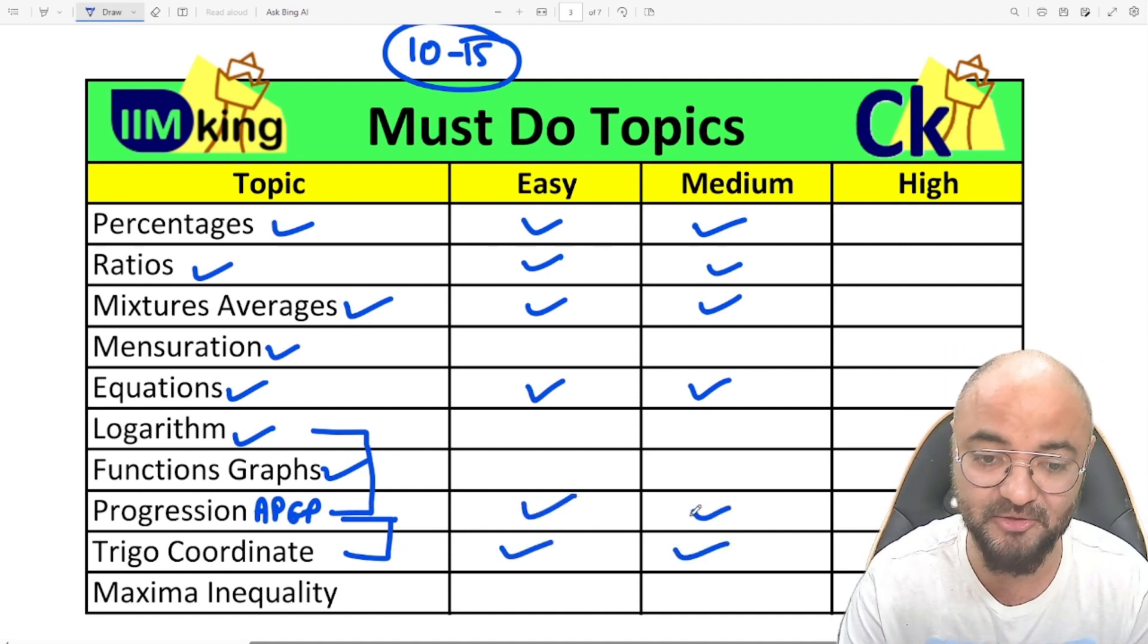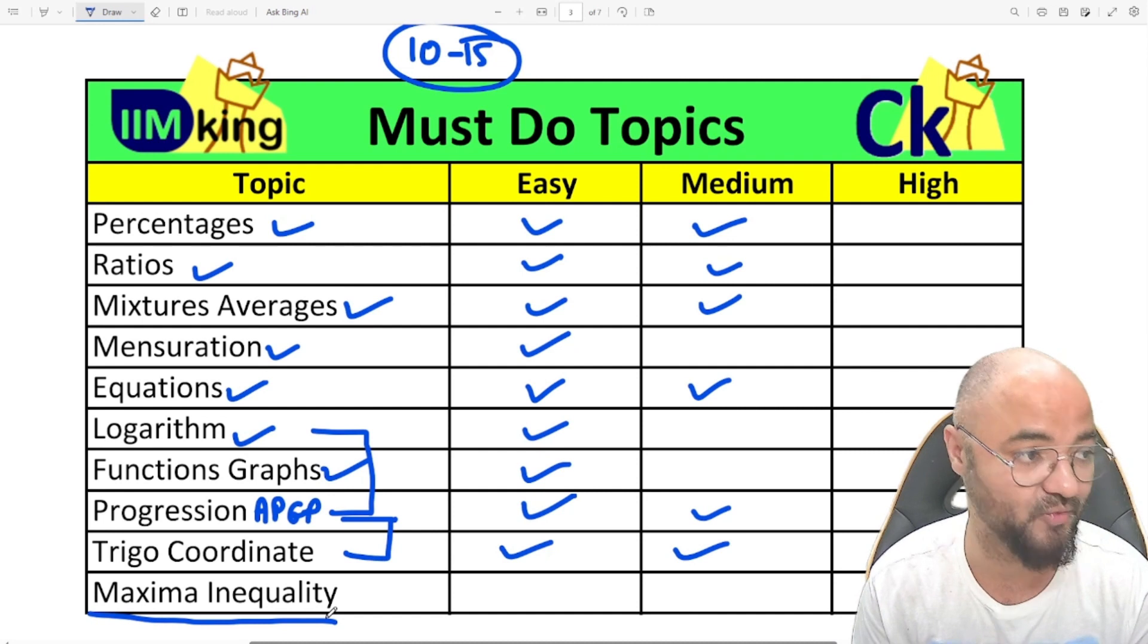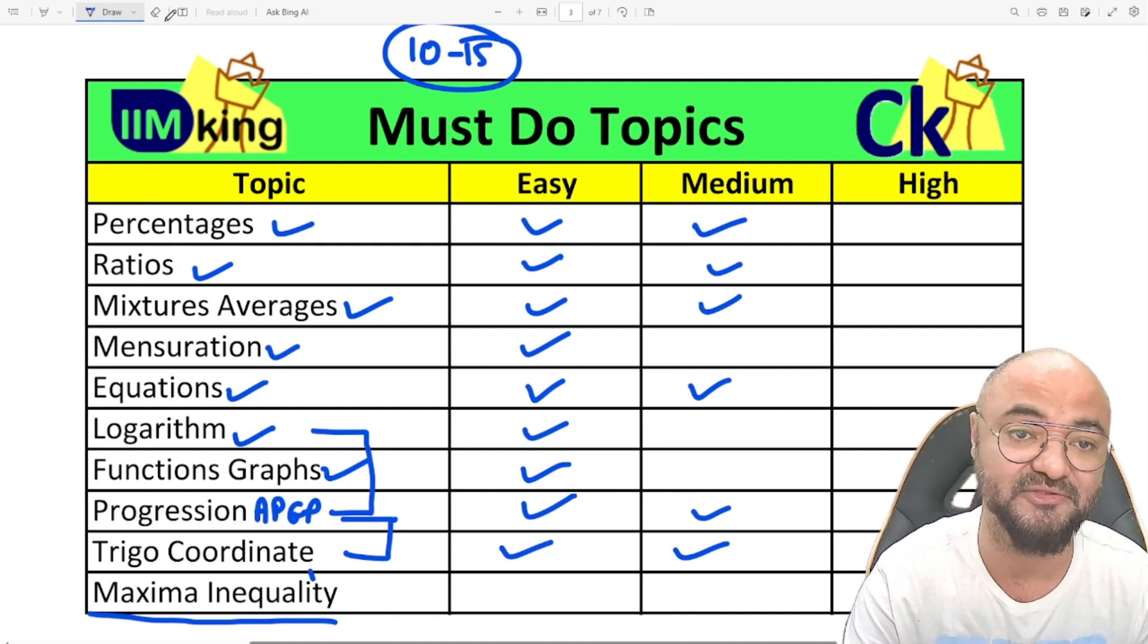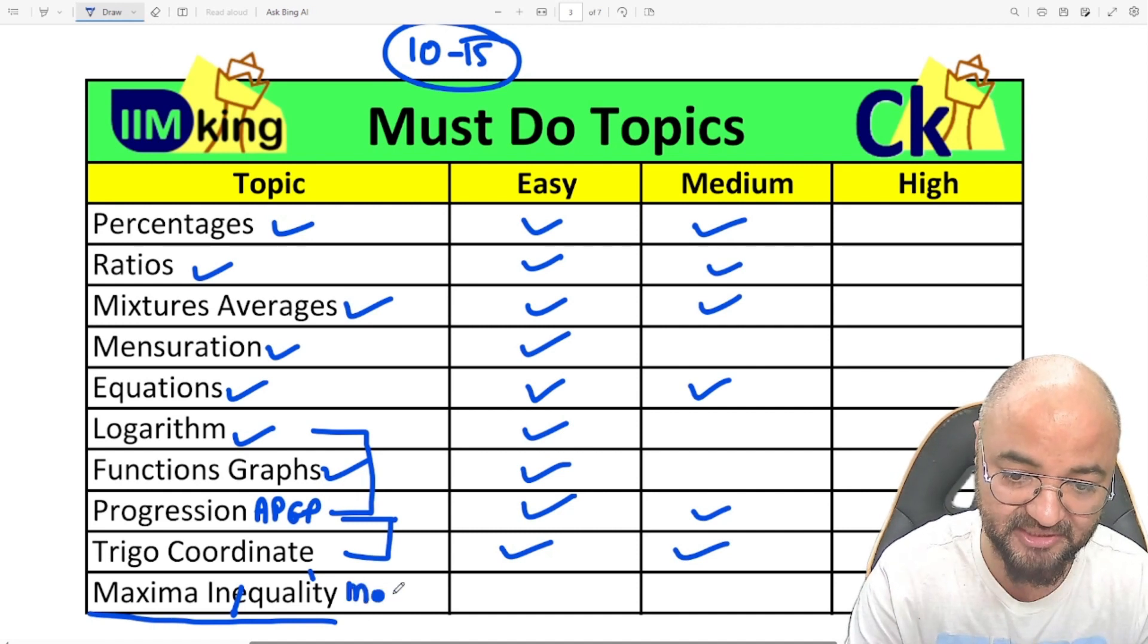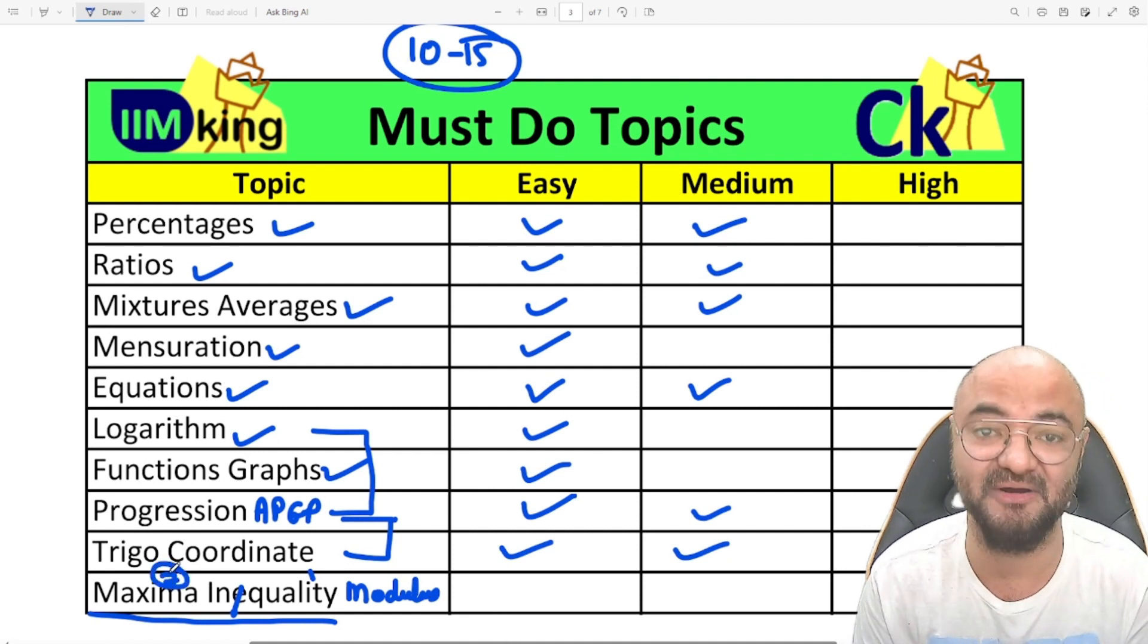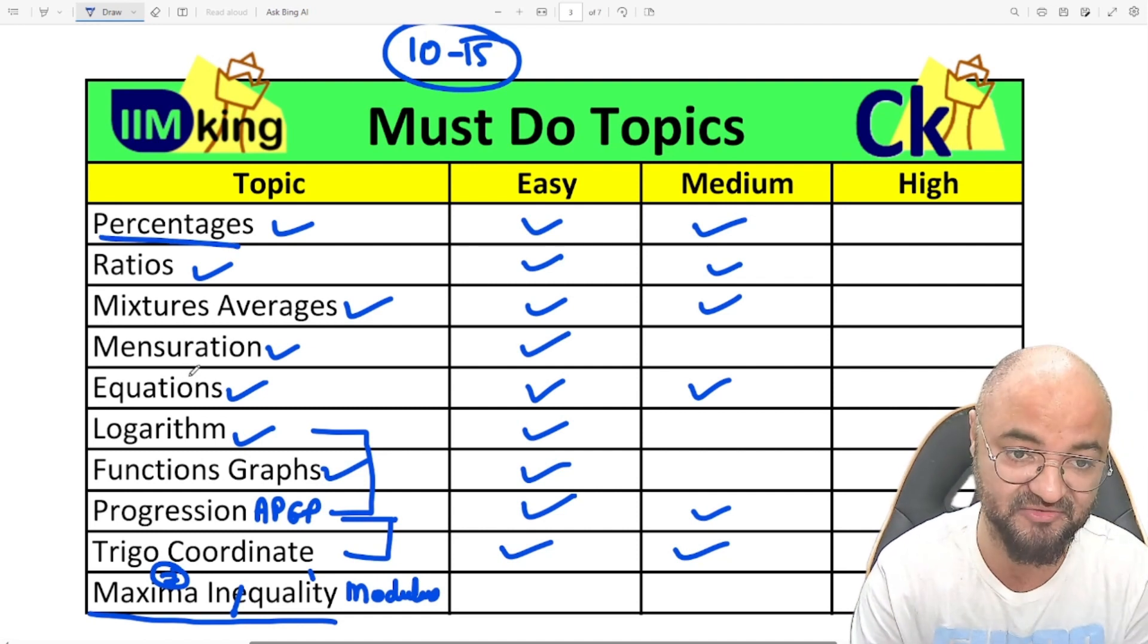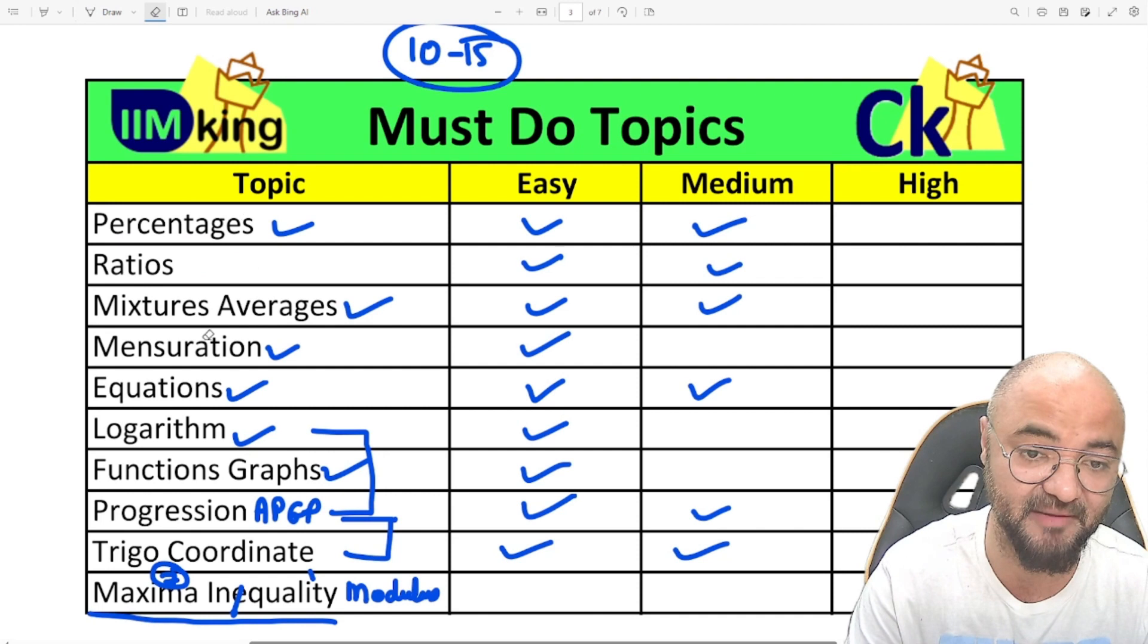Last but not least is maxima-minima and inequality. I can bet that maximum people are going to ignore these topics. If I add modulus into that—you'll be surprised to know last year there were seven questions which had maxima word in it: percentage questions with maxima-minima, ratio questions with maxima-minima. It's all jumbled up. That's why I call it a breakup strategy—let's break the paper into parts and solve them.